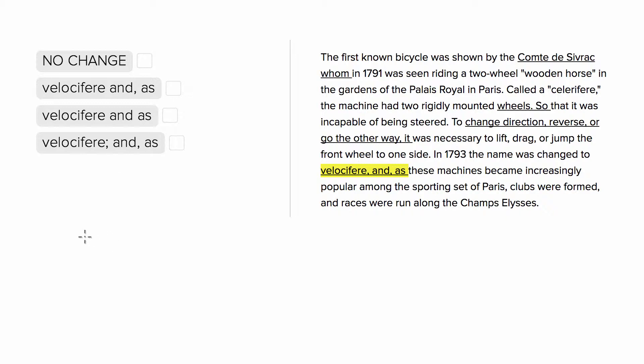The correct way to punctuate the conjunction AND is you have some sentence, you have comma AND, which is the same way to punctuate any conjunction, and you have the rest of the sentence.